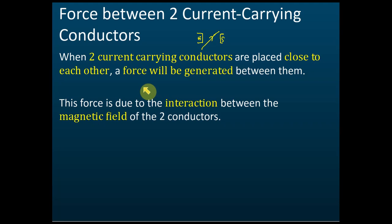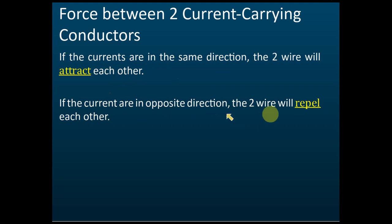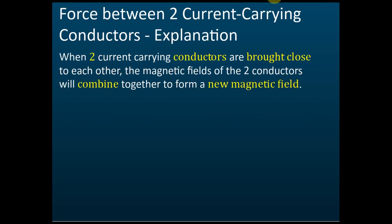The same catapult field effect occurs. If the currents are in the same direction, the two wires will attract each other. If the currents are in opposite directions, the two wires will repel each other. When two current-carrying conductors are brought close to each other, the magnetic fields of the two conductors combine together to form a new magnetic field.